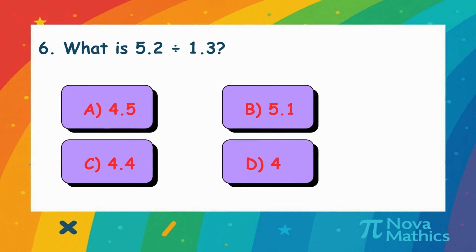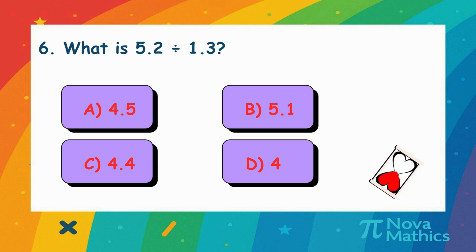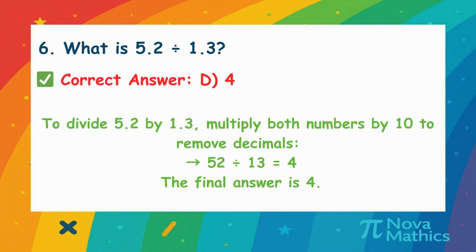5. What is 5.2 divided by 1.3? We want to divide 5.2 by 1.3. Multiply both by 10 to make them whole numbers. 52 divided by 13 equals 4.